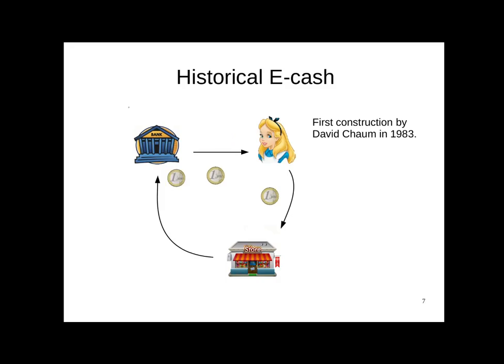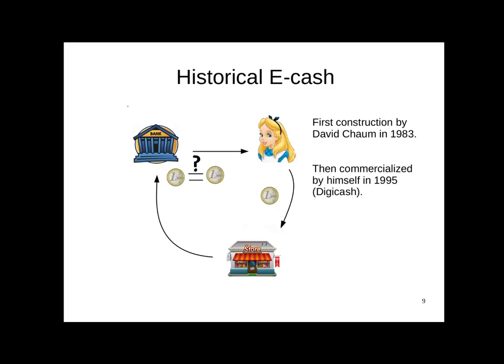With his definitions, Chaum guarantees that the bank can't identify the coin issued as the coin received—meaning the bank cannot link Alice and the merchant. Chaum has not only defined the main notions but has also built a first instantiation in the 80s and then deployed a concrete system with his company DigiCash in the 90s. The main drawback of such a system, in an offline context, is non-transferability.